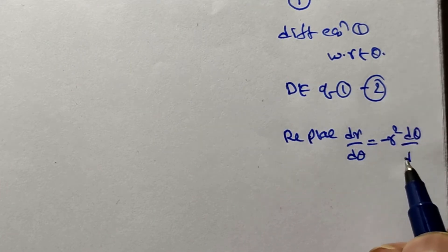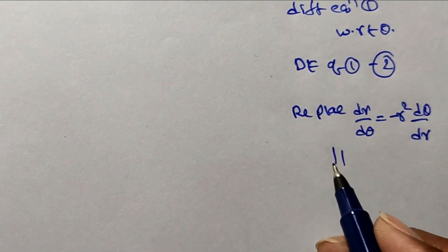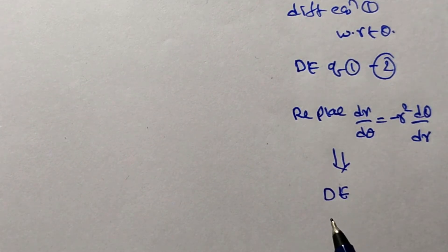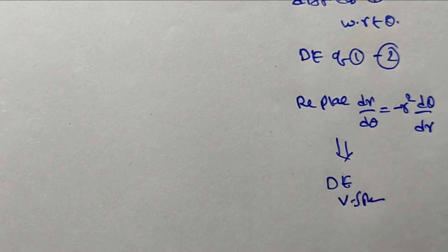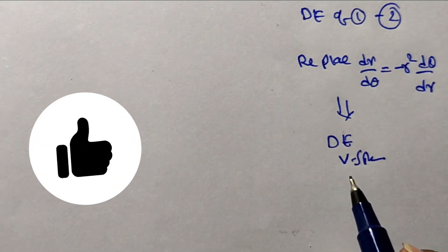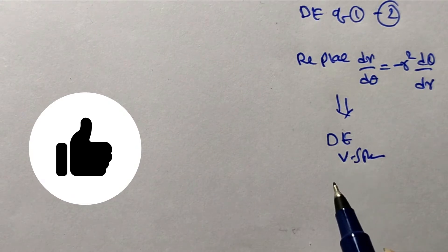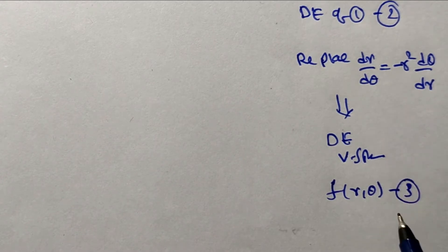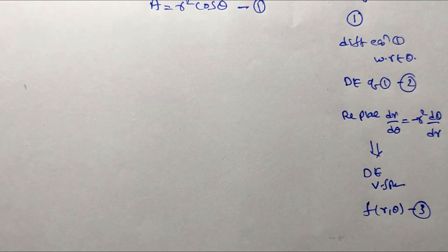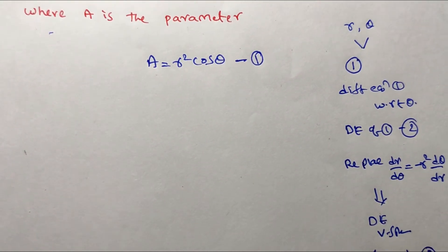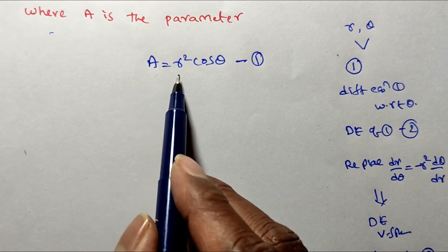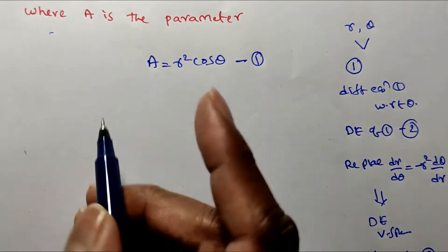After that substitution and simplification, we get another differential equation. Using the variable separable method or another first-order first-degree method, we get the function in terms of r and θ — this is equation number three, the required orthogonal trajectory. Now coming to the problem: the given equation number one is a = r² cos θ.